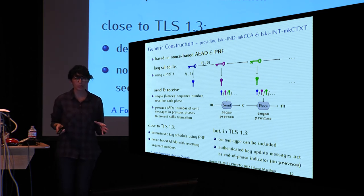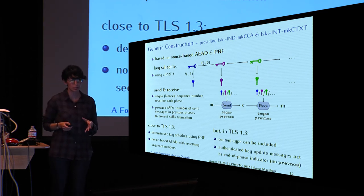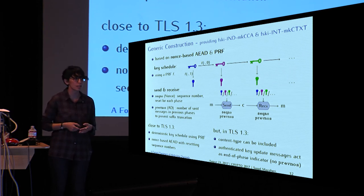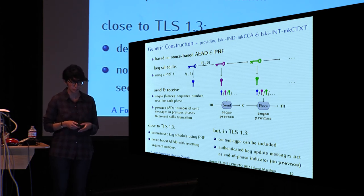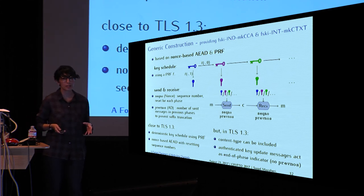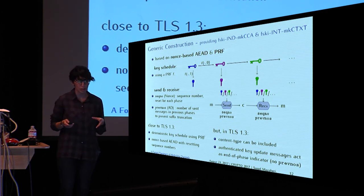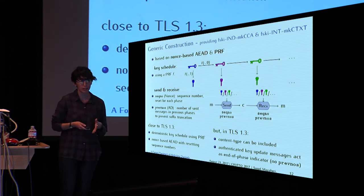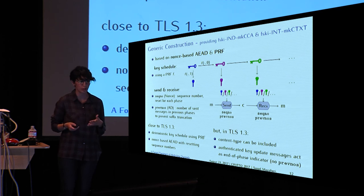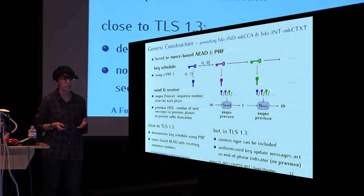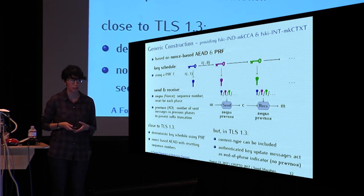This construction is quite close to TLS 1.3 in the way the key schedule is defined using the PRF and in the way send and receive are defined with nonce-based AEAD and resetting sequence numbers. However, there are some differences. For example, in TLS 1.3, content type can be included in the ciphertext to indicate an alert message or application data. Another important difference is that in TLS 1.3, key update messages are authenticated and sent in-band, acting as an end-of-phase indicator, so TLS does not need to include the number of previously sent messages in previous phases to prevent suffix truncation.